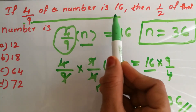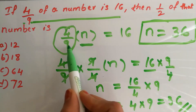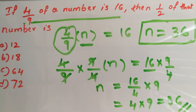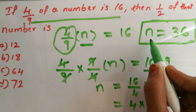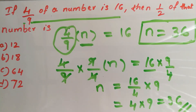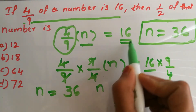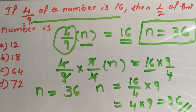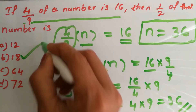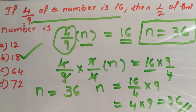4 ninths of a number is 16, so 4 ninths of 36 is 16. Then half of that number — our number is 36, so half of 36 is nothing but 18. Our answer is 18. 4 ninths of 36 is 16. What is half of 36? It is nothing but 18. 36 divided by 2 is 18.